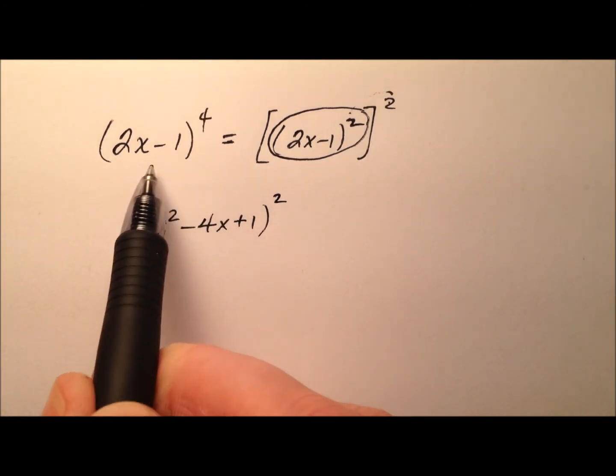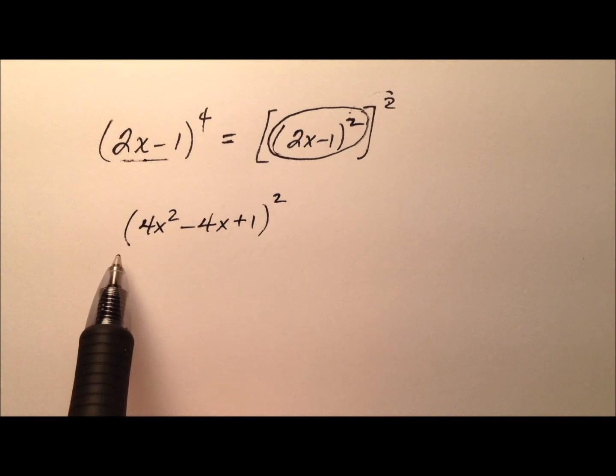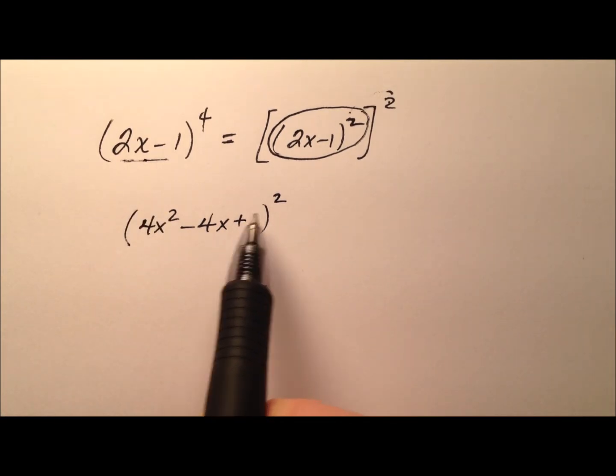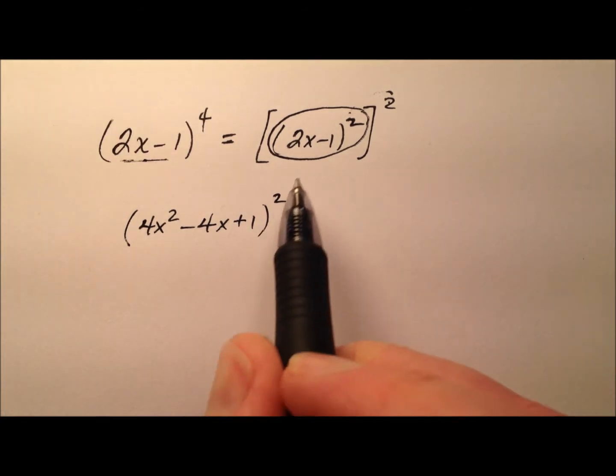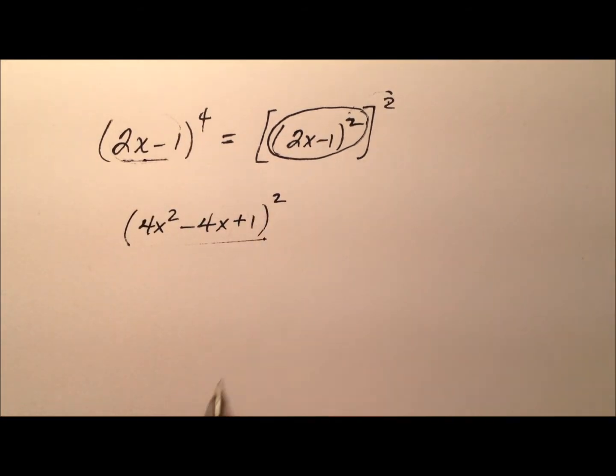So taking something to the power of 4, you don't necessarily want to just write 4 of them all in expanded form next to each other and then start cranking out the multiplication. We can work a little smarter instead of working harder, so we'll square it first, and then take this square and square it again.